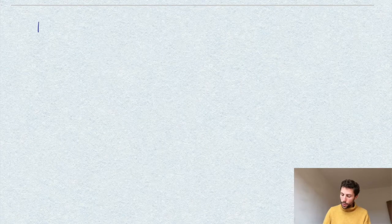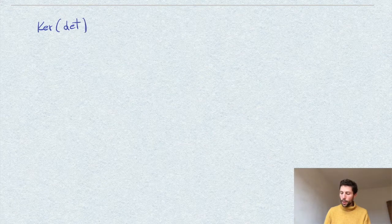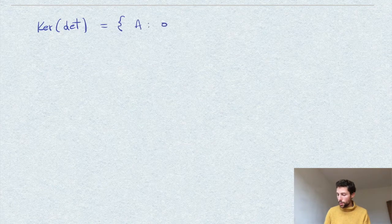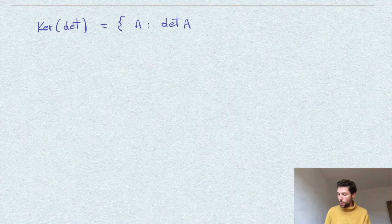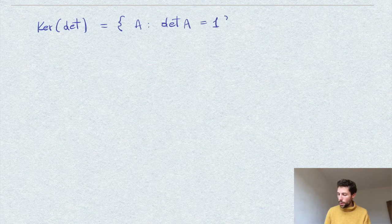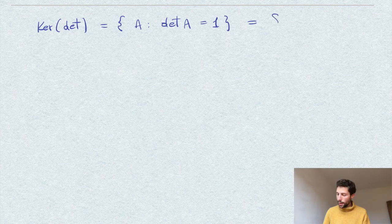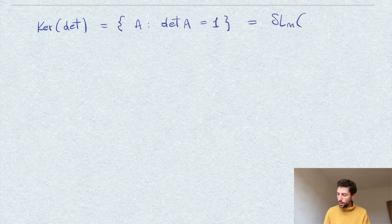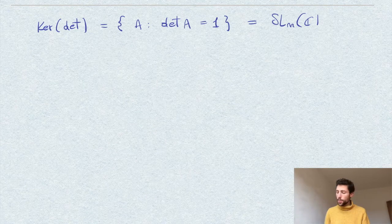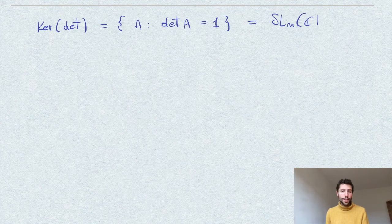Now, of course, the kernel of the determinant map, which is equal to the set of matrices with the determinant equal to one, is precisely SL_n(C). And being equal to the kernel of a homomorphism of groups, we see that this group SL_n(C) is normal.